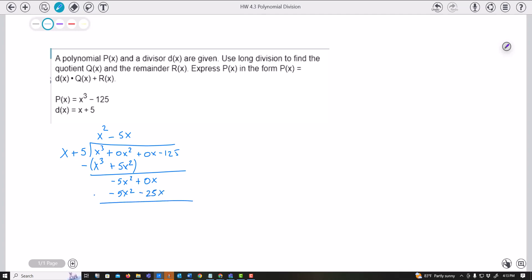And once again, I am subtracting these. So that's going to cancel. This becomes a positive 25x. Bring down my negative 125. I'm looking at x going into 25x. I believe that would go 25 times. 25 times x is 25x. 25 times 5 is 125.